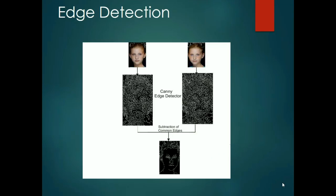The edge detection process makes use of the Canny edge detector function. Initially, the images of both twin A and twin B are fed as input to the Canny edge detector function. Once the edged images are obtained, the left half of twin A and the right half of twin B are morphed together, thereby generating a new image.